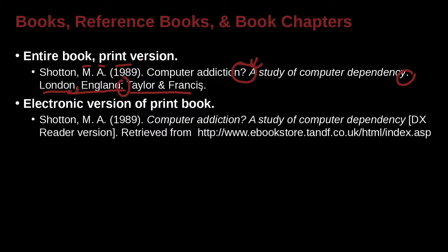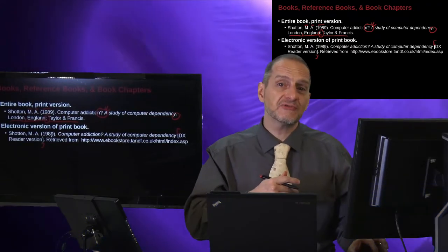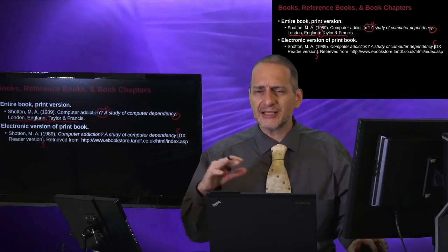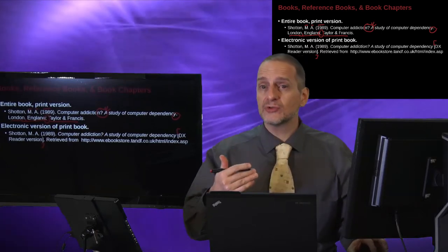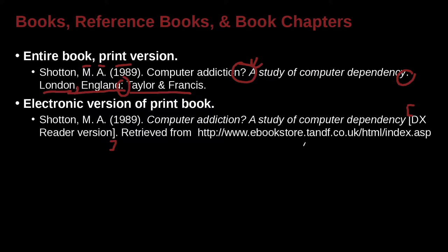What if this was an electronic version of this book? Then we would follow almost the same format, except at the end we would indicate the version — for example, the DX reader version. You see this open bracket and closed bracket. Those brackets are for special, extra information. So you may say something like the Kindle version, the DX version, or the web version — something special that doesn't fit standard APA but is helpful for the reader to see where this source came from. Then we have the URL. No period at the end, because the citation is already finished before it, and the 'retrieved from' is extra information.